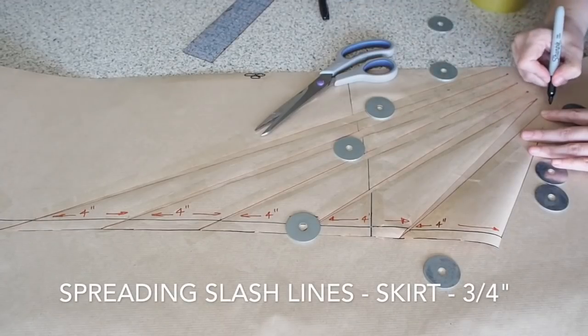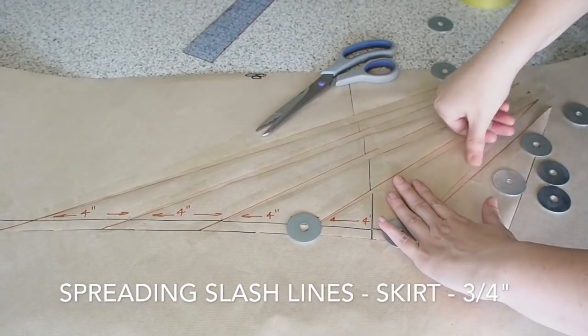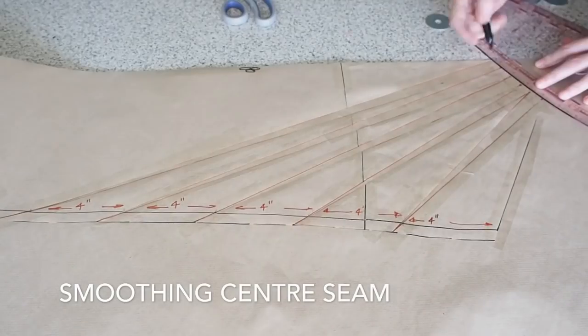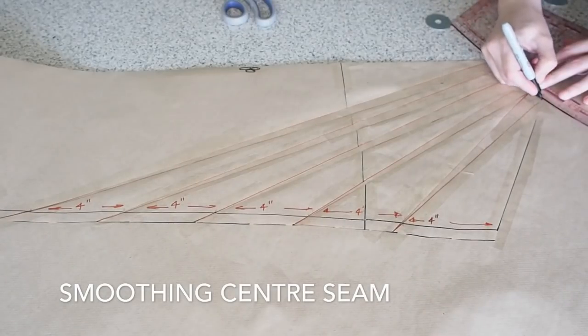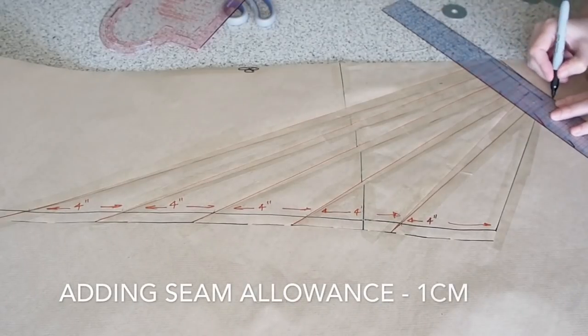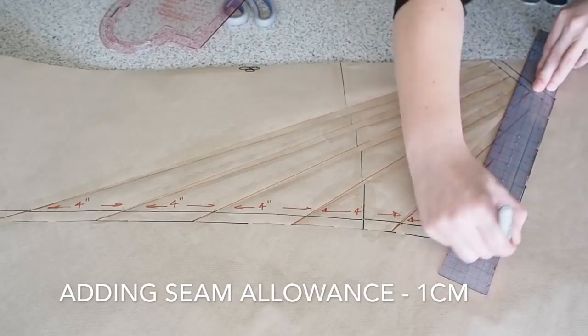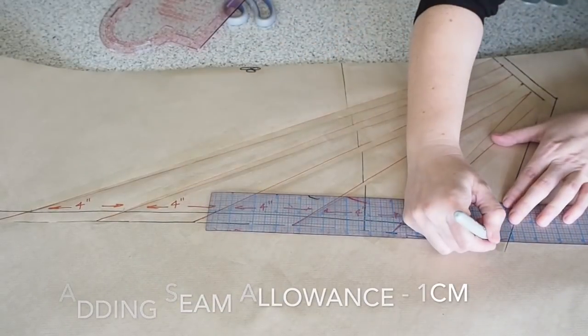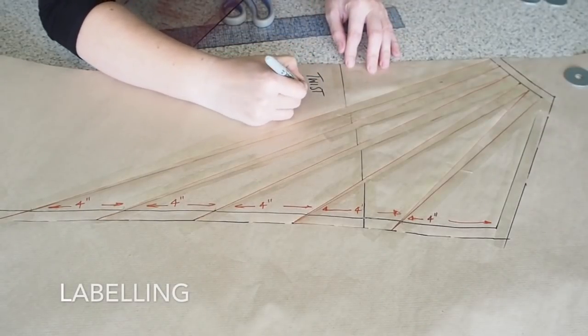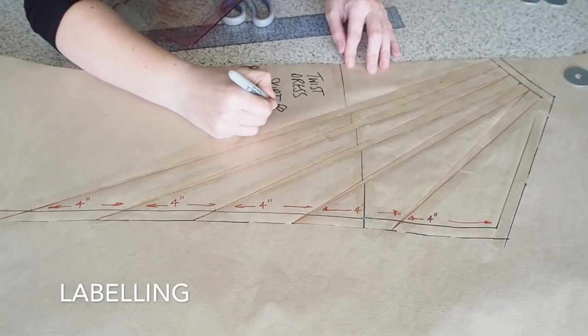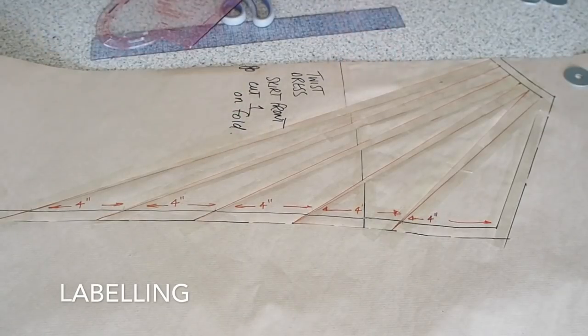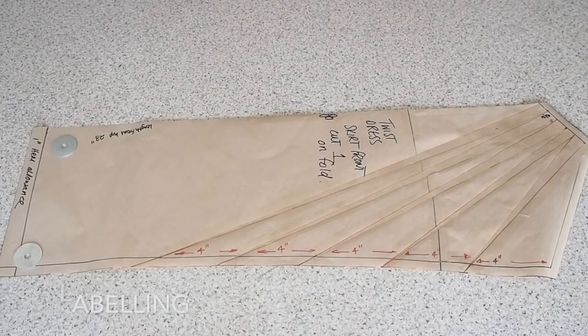So onto the skirt. So this is my last slash line. I've done exactly the same thing as I just did on the bodice. So slash through those lines, open them up by three quarters of an inch, and now I'm just smoothing off that nice curve. Giving myself my one centimeter seam allowance. Labeling. And this just like the bodice will be cut on the fold. So I'll cut one. So that's that done. And you see I've corrected the length there to 23 inches.